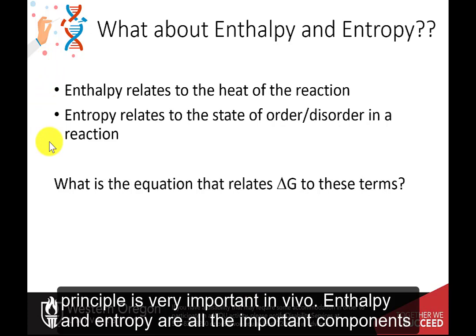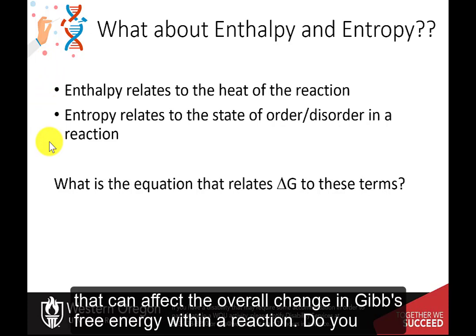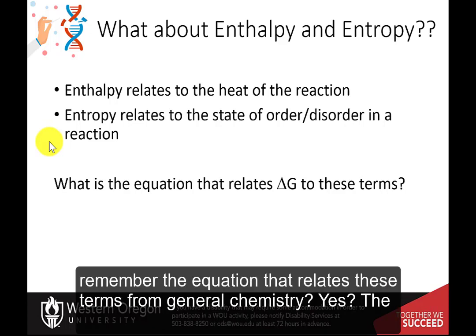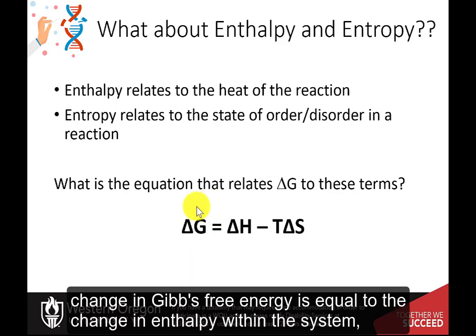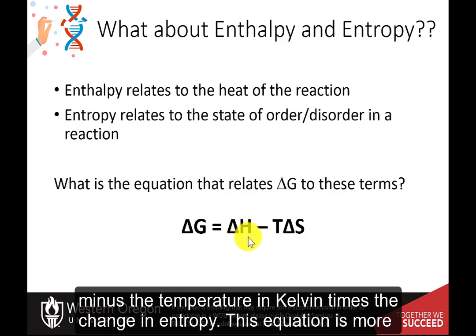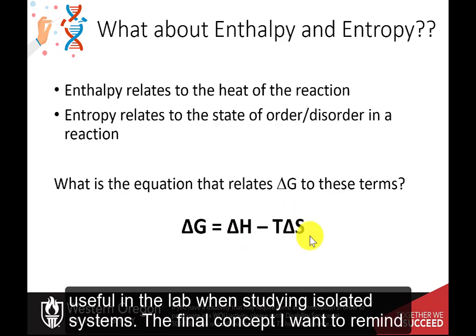Enthalpy and entropy are also important components that can affect the overall change in Gibbs free energy within a reaction. The change in Gibbs free energy equals the change in enthalpy within a system minus the temperature in Kelvin times the change in entropy. This equation is more useful in the lab when studying isolated systems.